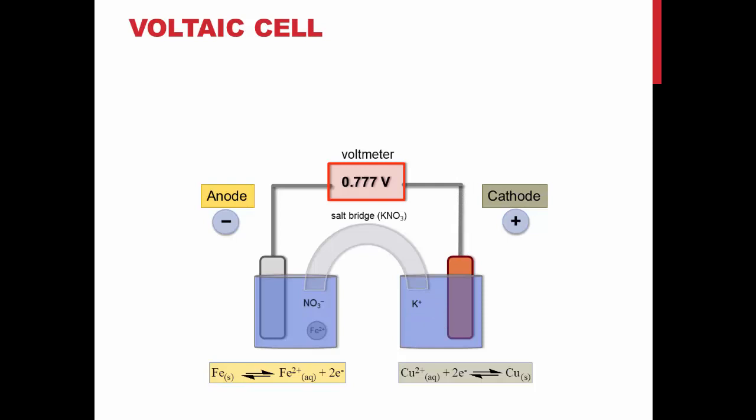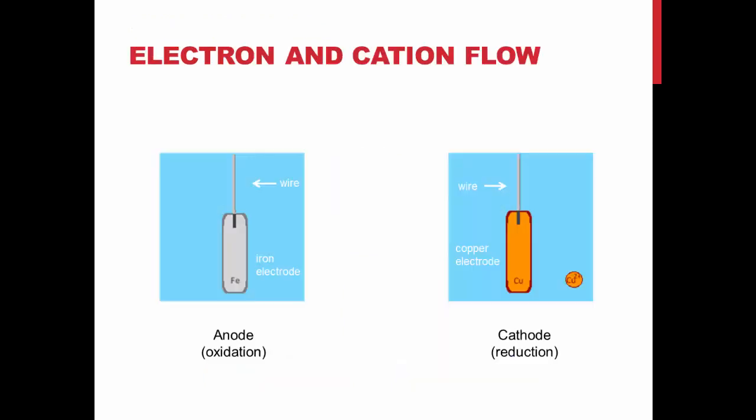Here is a close-up of the anode and cathode in their respective solutions. As you can see, the reduction of copper ions produces electrons, which travel up the wire connected to the cathode. These travel all the way to the anode, where they oxidize the iron, forming an iron ion. This flow of electrons is what creates the voltage you will measure.